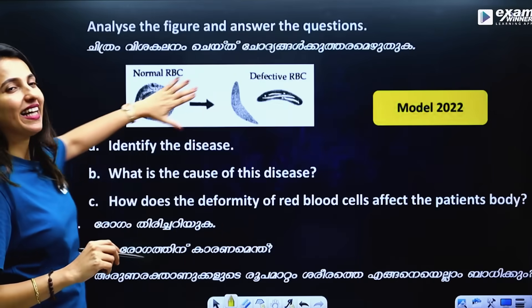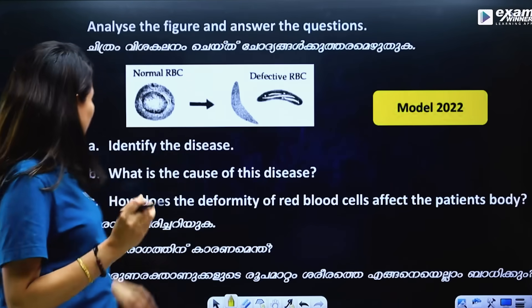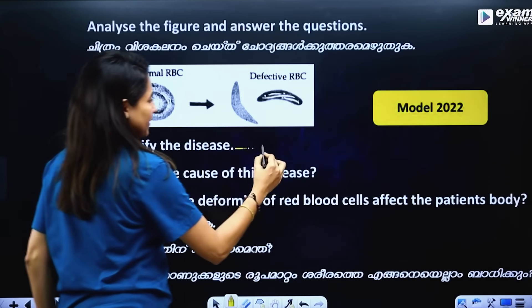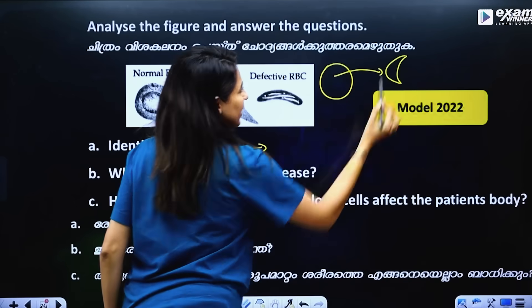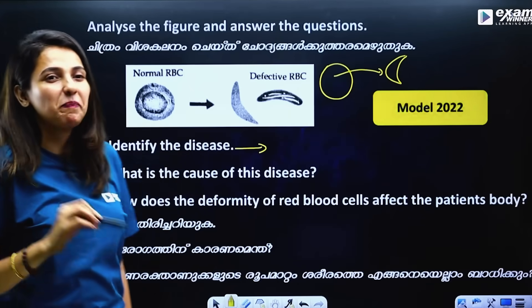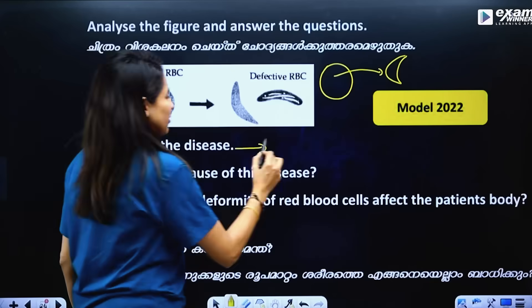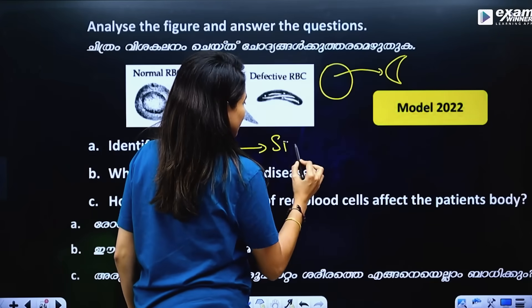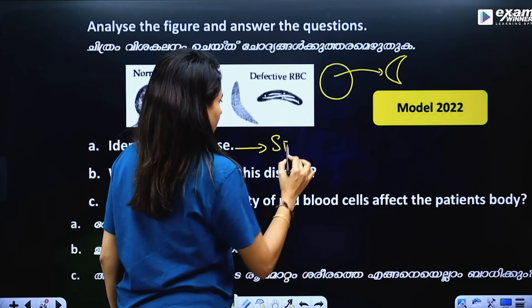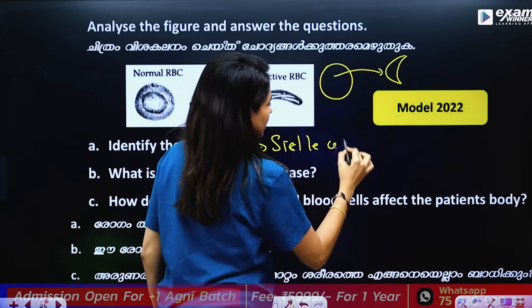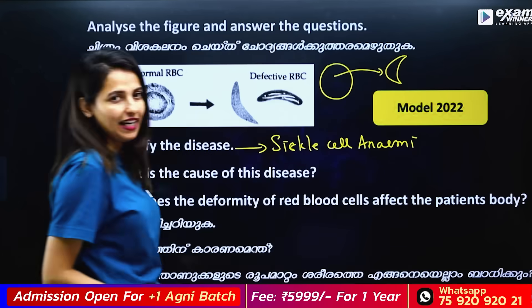The first question is: identify the disease. Looking at the shape, this disease is sickle cell anemia.